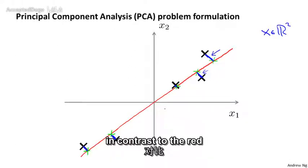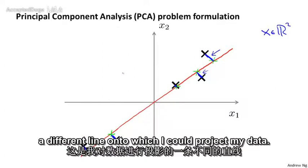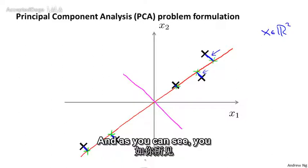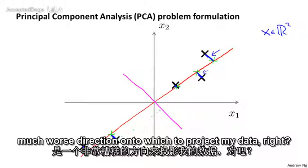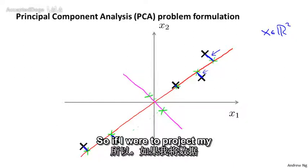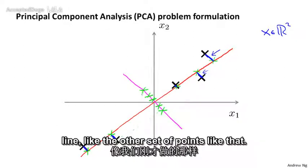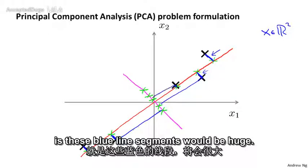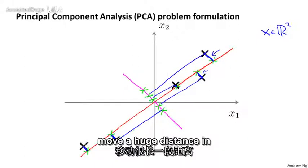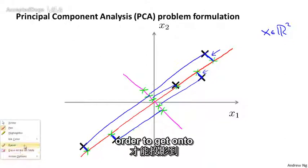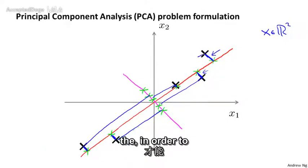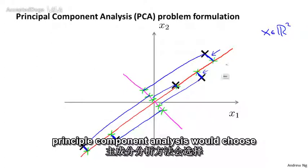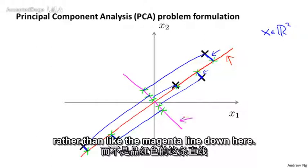Coming back to this example, in contrast to the red line, here's a different line onto which I could project my data — this magenta line. As you can see, this magenta line is a much worse direction onto which to project my data. If I project my data onto the magenta line, the projection errors — these blue line segments — will be huge. These points have to move a huge distance to get projected onto the magenta line. That's why PCA would choose something like the red line rather than the magenta line.